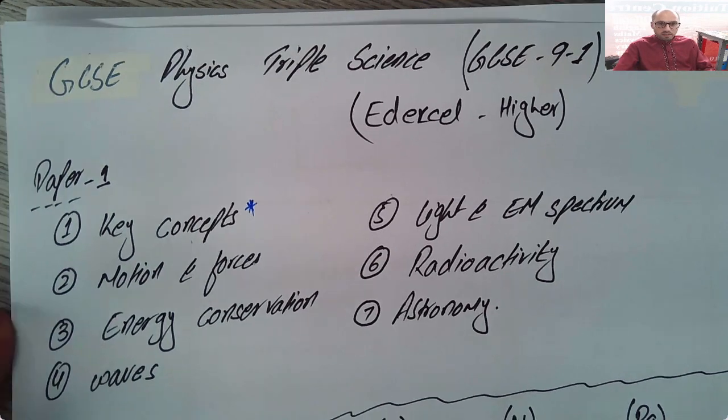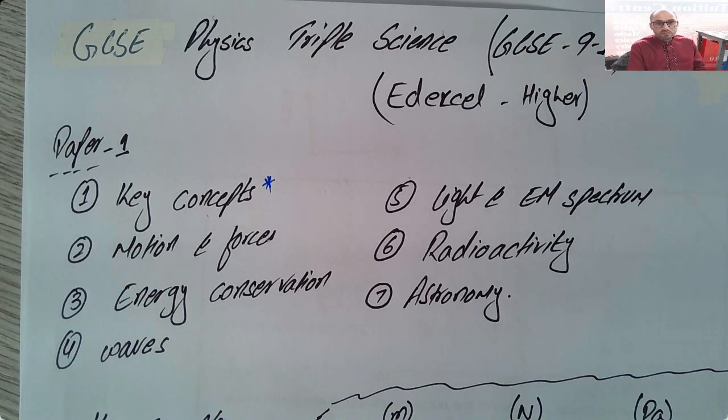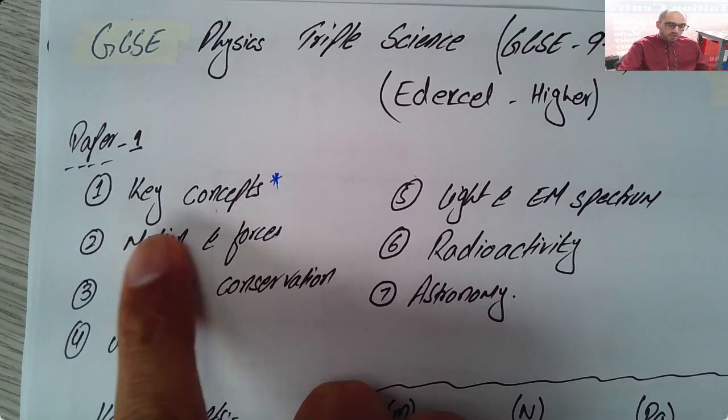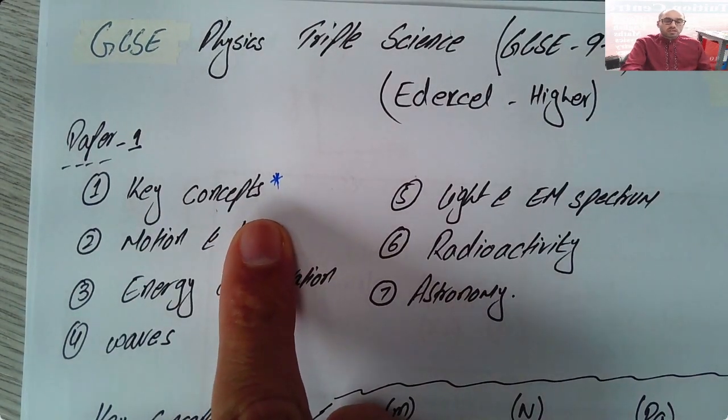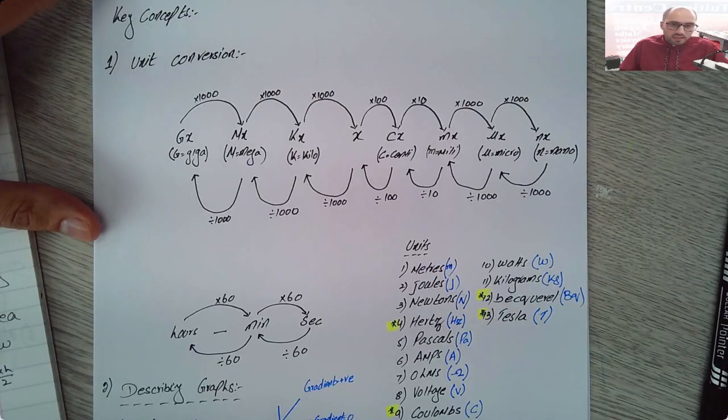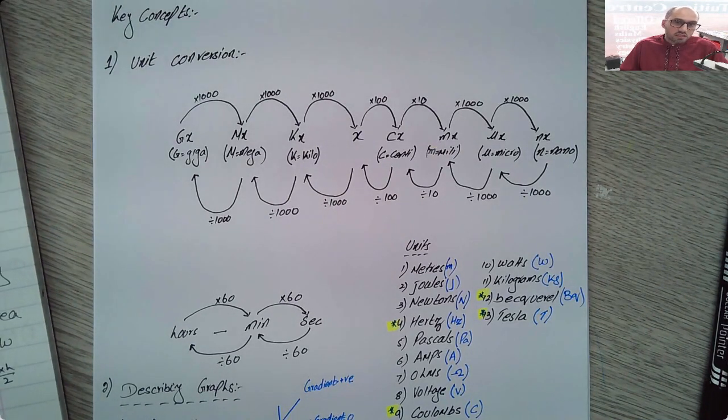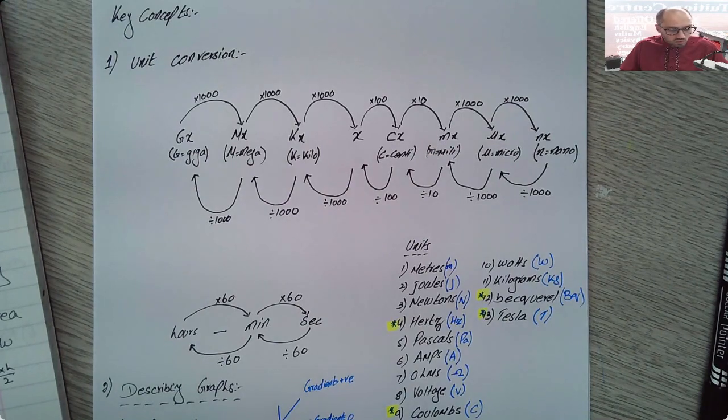Now the first topic is a common topic to paper one and paper two. So the concepts from the first topic which is called key concepts here, you will need to know these concepts in order to do well on both papers. Let us have a quick look at the topic called key concepts. To do well on both papers there are three skills from this topic that you must all know.